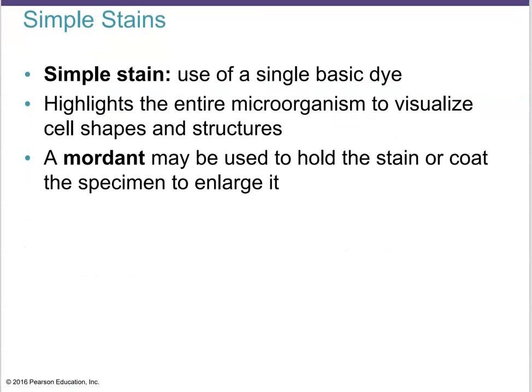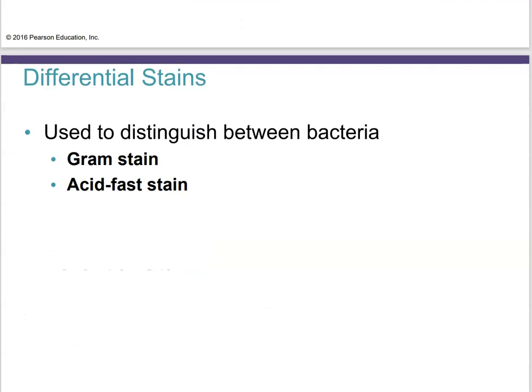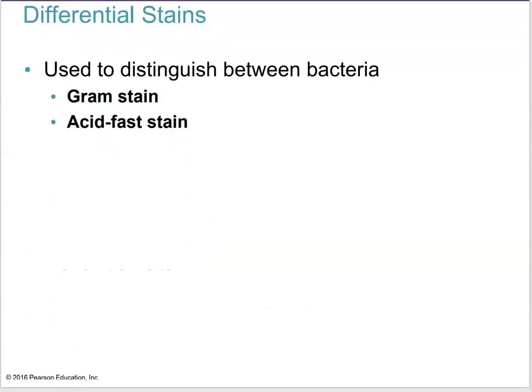A simple stain is exactly what the name indicates — you use a single basic dye. You still need to smear your organisms, dry them to fix them onto your slide, add the simple stain, let it sit for a little while, and then wash off the excess. Sometimes you need a mordant to hold the stain in the specimen so it doesn't wash out. Differential stains like the gram stain and acid fast stain go further than this.